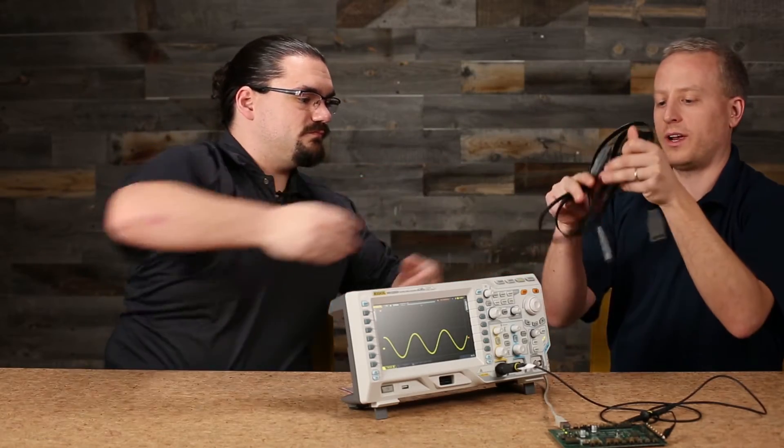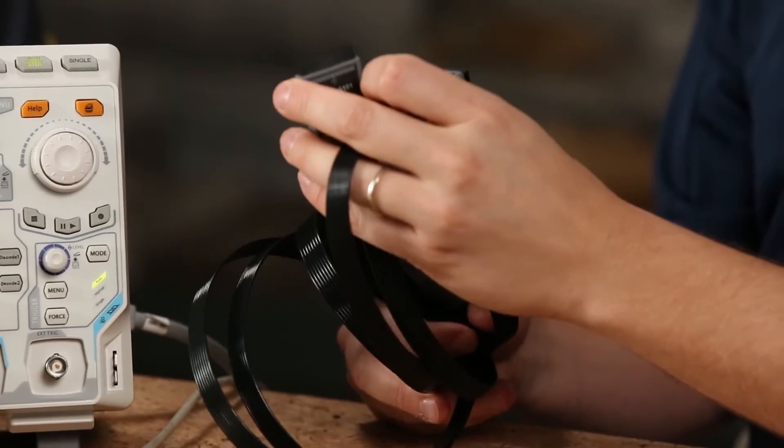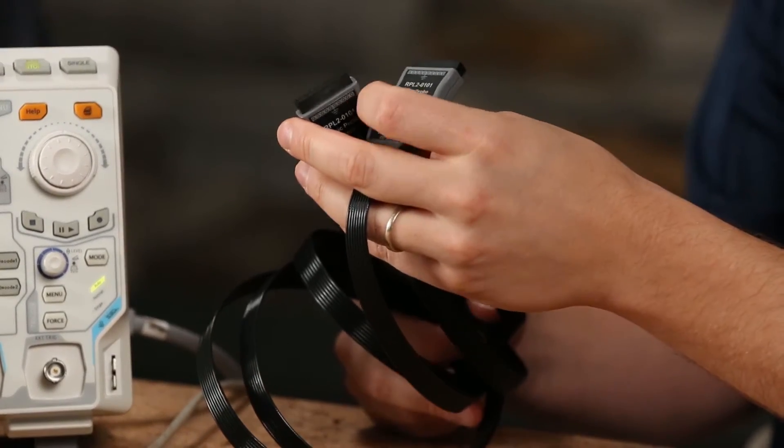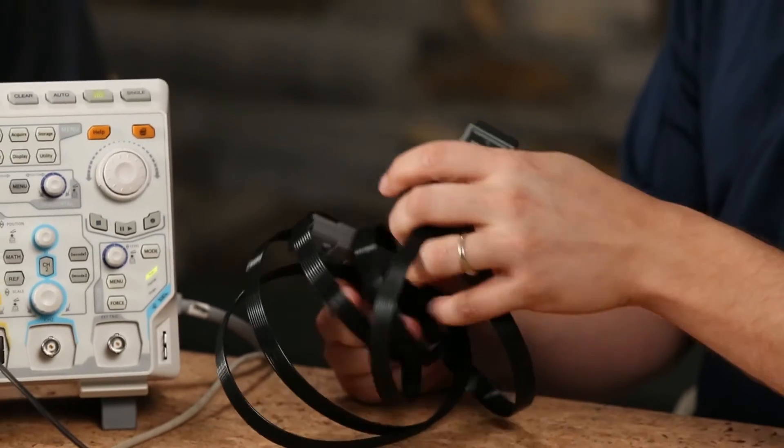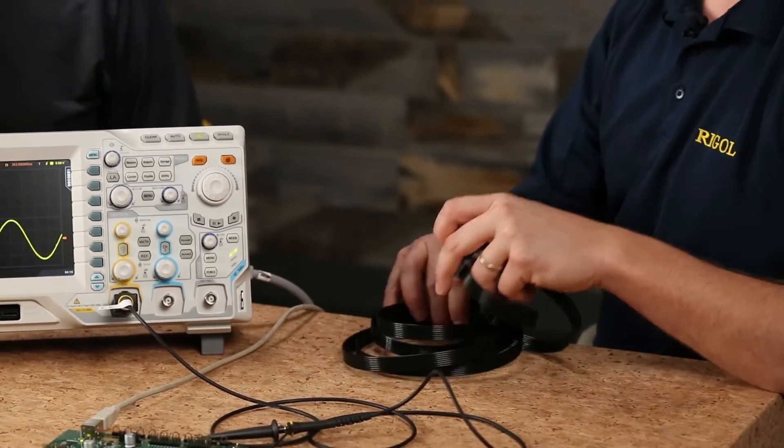Yeah, so this is our sort of breakout for the digital channels, so we've got a couple pieces here that can go into headers on boards. This set also comes with some flying wires and clips so you can get to a number of different ways to connect to it, for any of your test points that might be on the board when you don't have a nice convenient header.